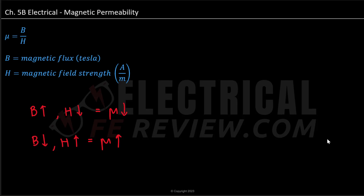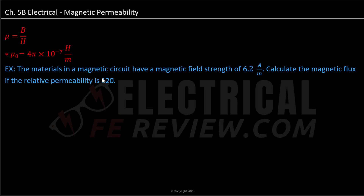Let's look at an example to further understand. Our example states that the materials in a magnetic circuit have a magnetic field strength of 6.2 amperes per meter. Calculate the magnetic flux if the relative permeability is 120. So we are given magnetic field strength H equal to 6.2 amperes per meter, and relative permeability μr equal to 120.